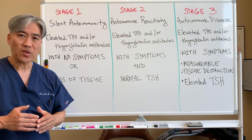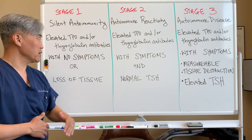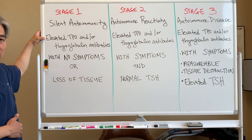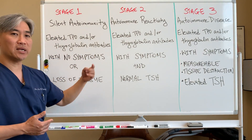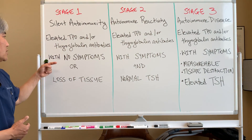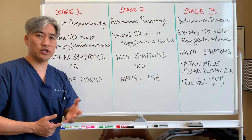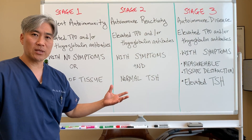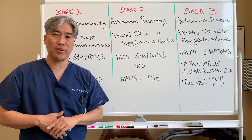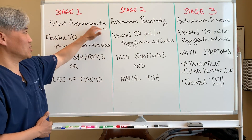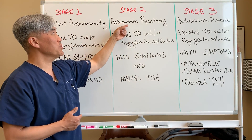So let's look at it. We have Stage One, when someone comes in and they have what they call silent autoimmunity. What that means is that they have antibodies to their thyroid — they have TPO and thyroglobulin antibodies that are positive — yet they have no symptoms and they have no loss of thyroid tissue. The labs come back normal, everything's normal, except they have an elevation of thyroid antibodies, yet it's silent.